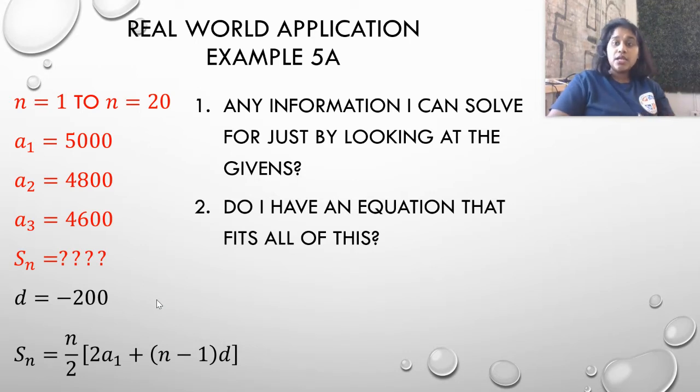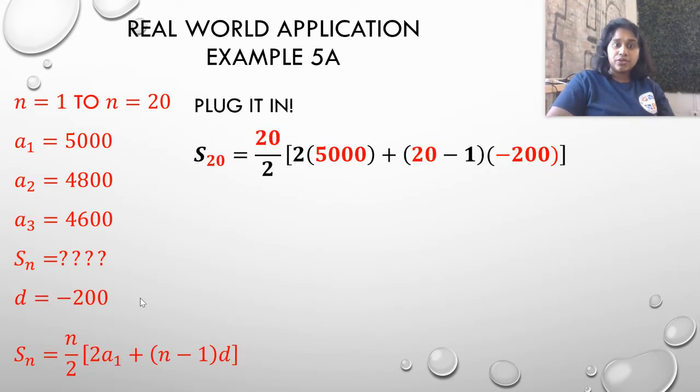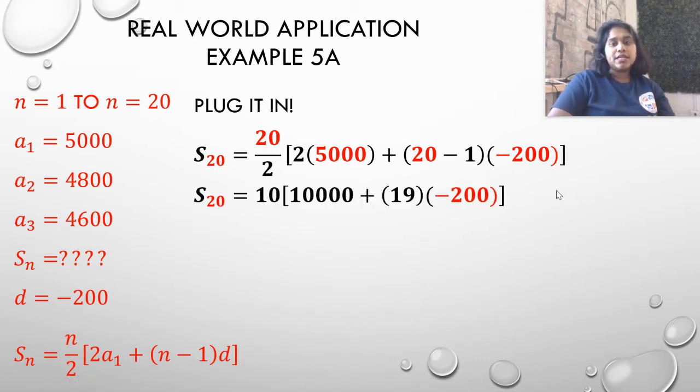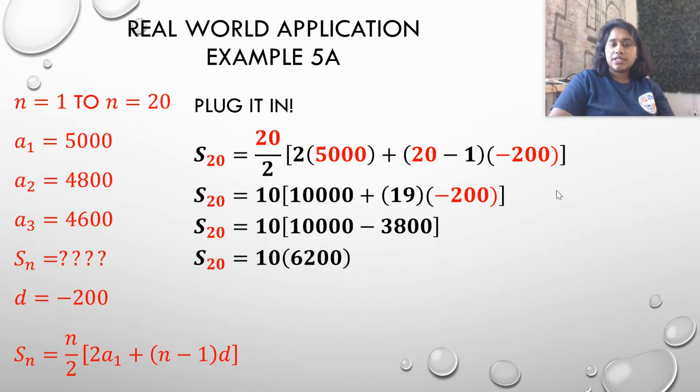So I'm going to plug in what I know. I know the n value is 20, so I plug in 20 in both of the n value locations. I plug in a₁, and I plug in the d value. Now I finish my solve. 20 minus 1 is 19. 20 divided by 2 is 10. 2 times 5,000 is 10,000. 19 times negative 200 is negative 3,800. 10,000 minus 3,800 is 6,200 times 10 is 62,000.